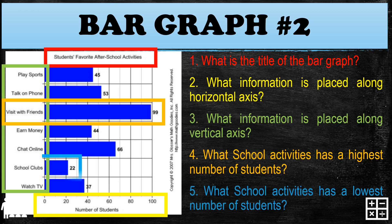Very good — it's 'Visit with Friends.' Most students' favorite after-school activity is visiting their friends. Next, for question five, what school activity has the lowest number of students? We look for the lowest number of students who like a particular activity. The lowest number of students is for 'School Clubs' — it seems students don't like to go to school clubs very much. That concludes bar graph number two. Let's try our last bar graph.